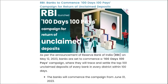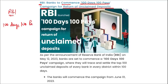Next: RBI banks to commence a 100 days, 100 pays campaign for return of unclaimed deposits. RBI announced on 12th of May that banks are set to commence a campaign where they will trace and settle the top 100 unclaimed deposits of every bank in every district within 100 days. Banks will commence this operation from 1st of June.